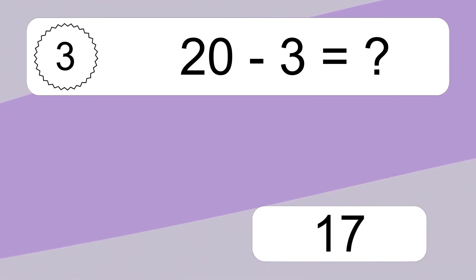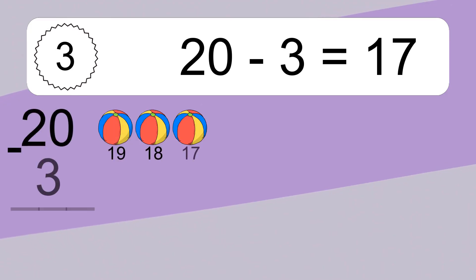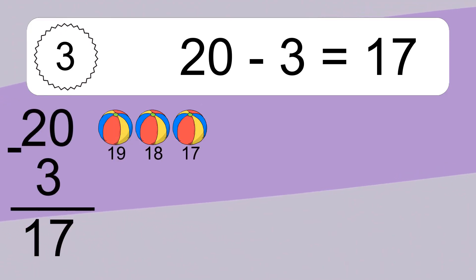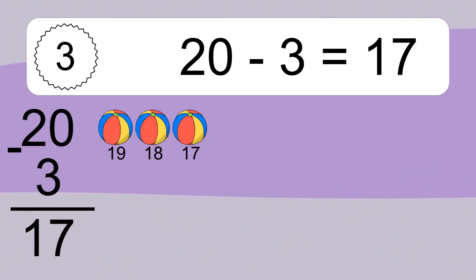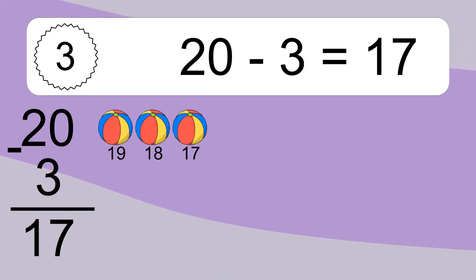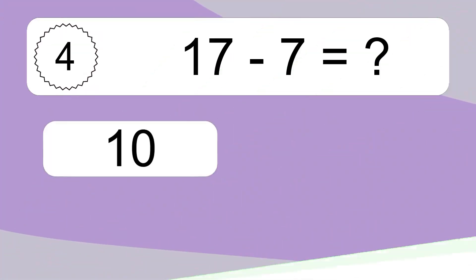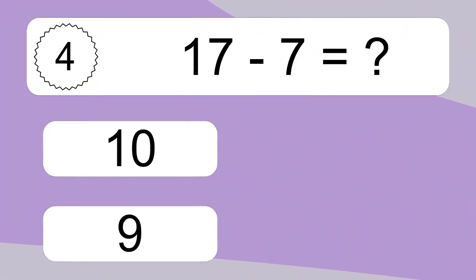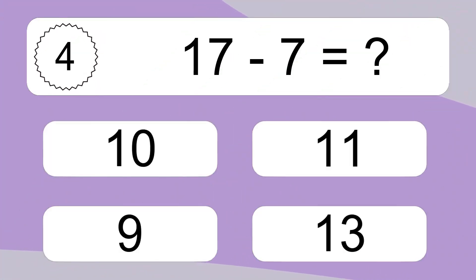20 minus 3 equals what? 20 minus 3 equals 17. Let's count it: 19, 18, 17.